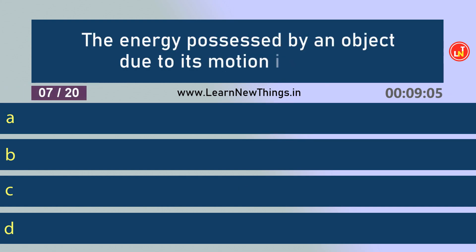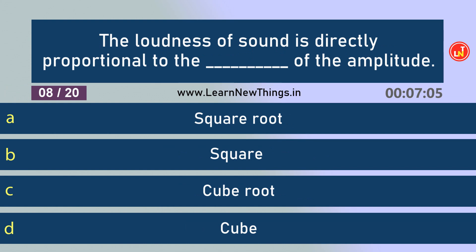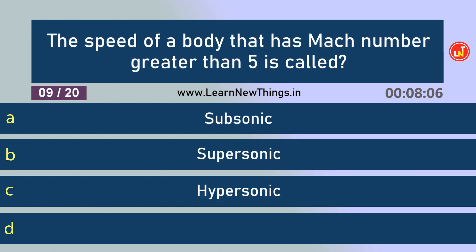The energy possessed by an object due to its motion is called kinetic energy. The loudness of sound is directly proportional to the square of the amplitude. The speed of a body that has Mach number greater than 5 is called hypersonic.